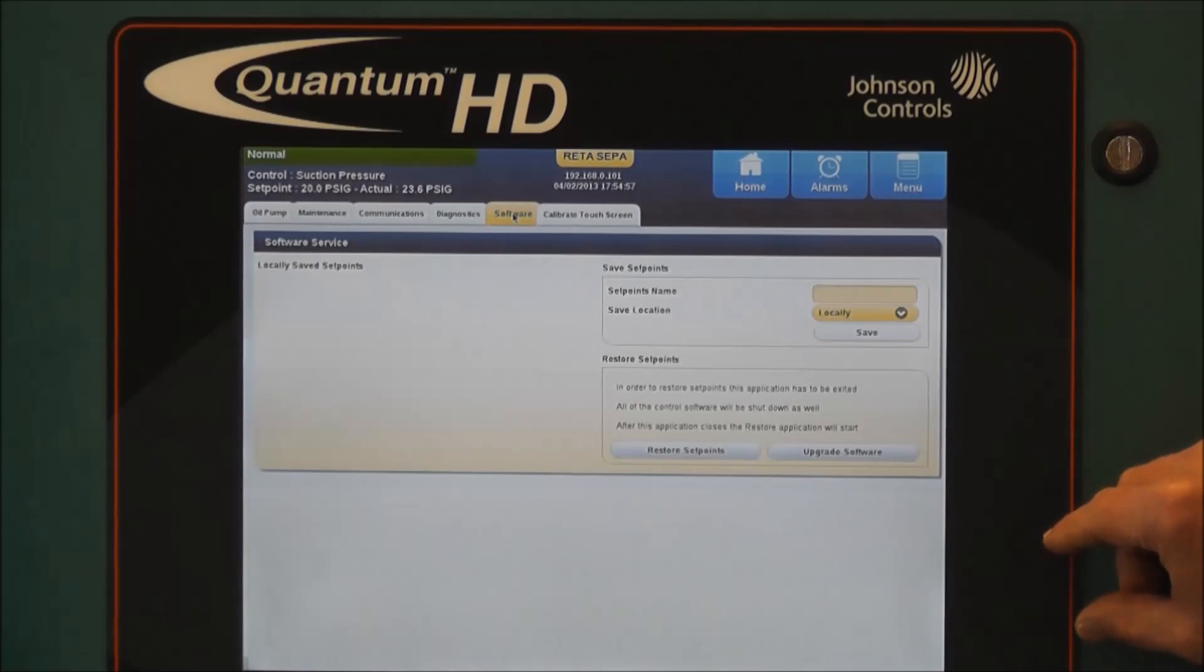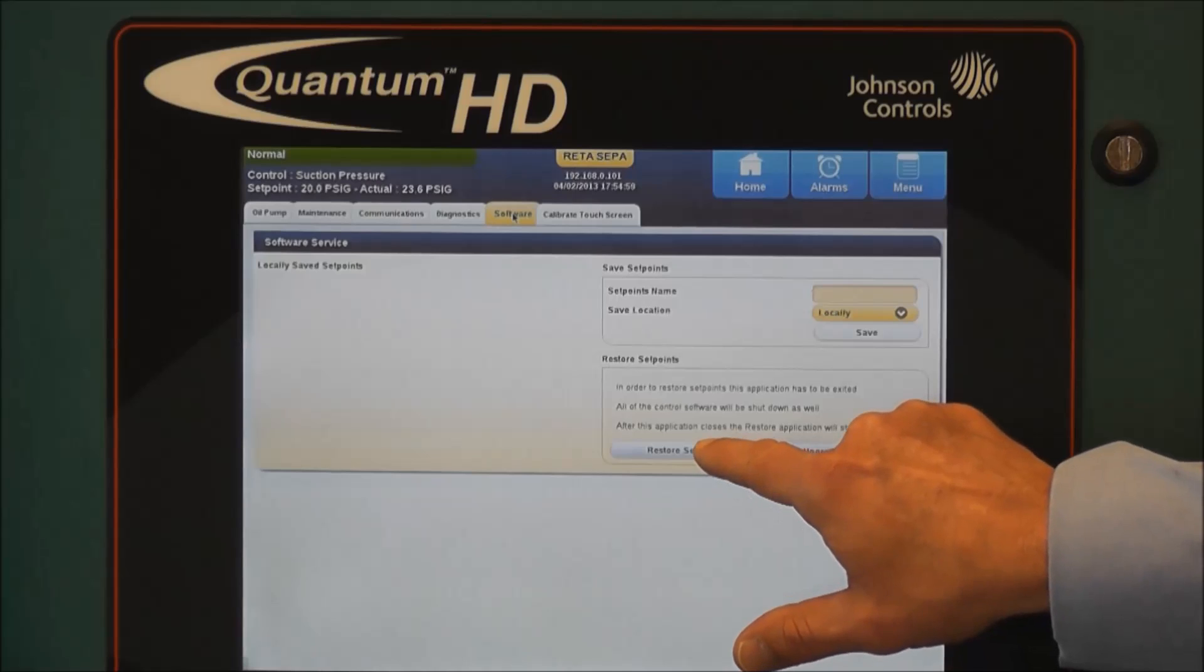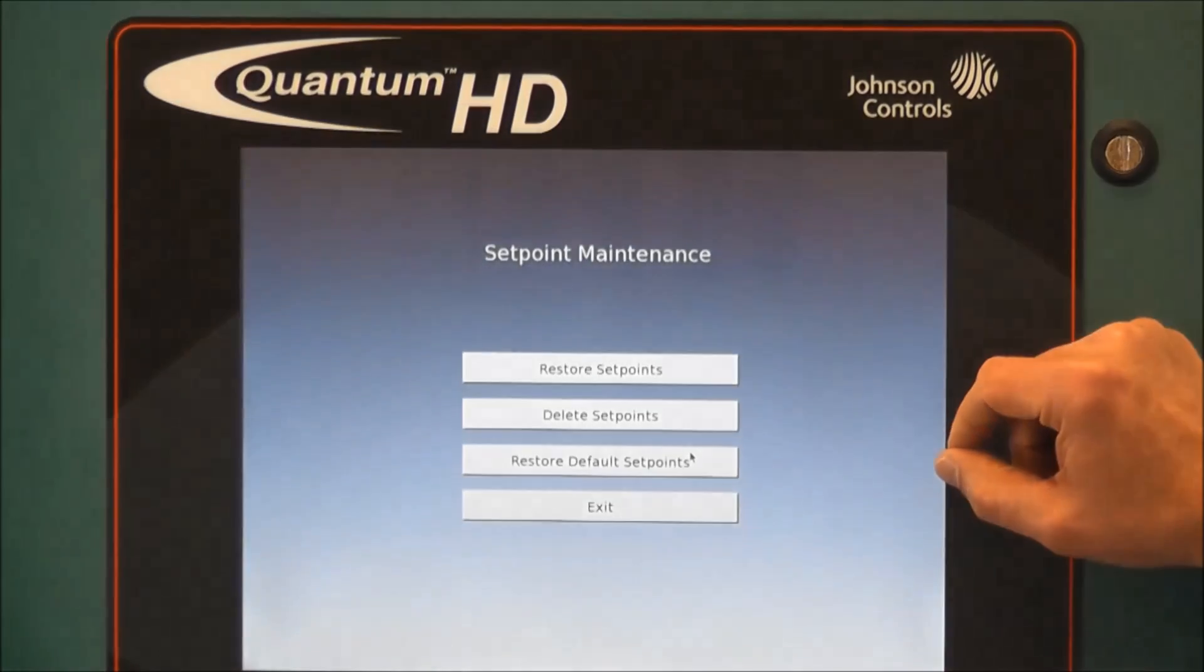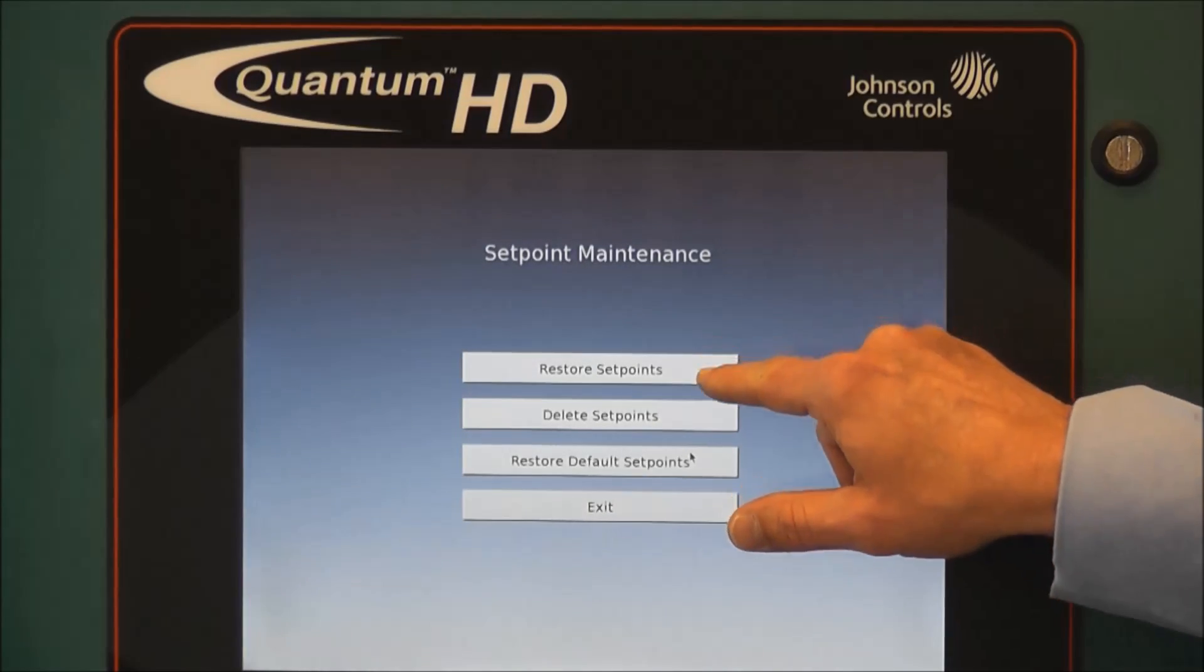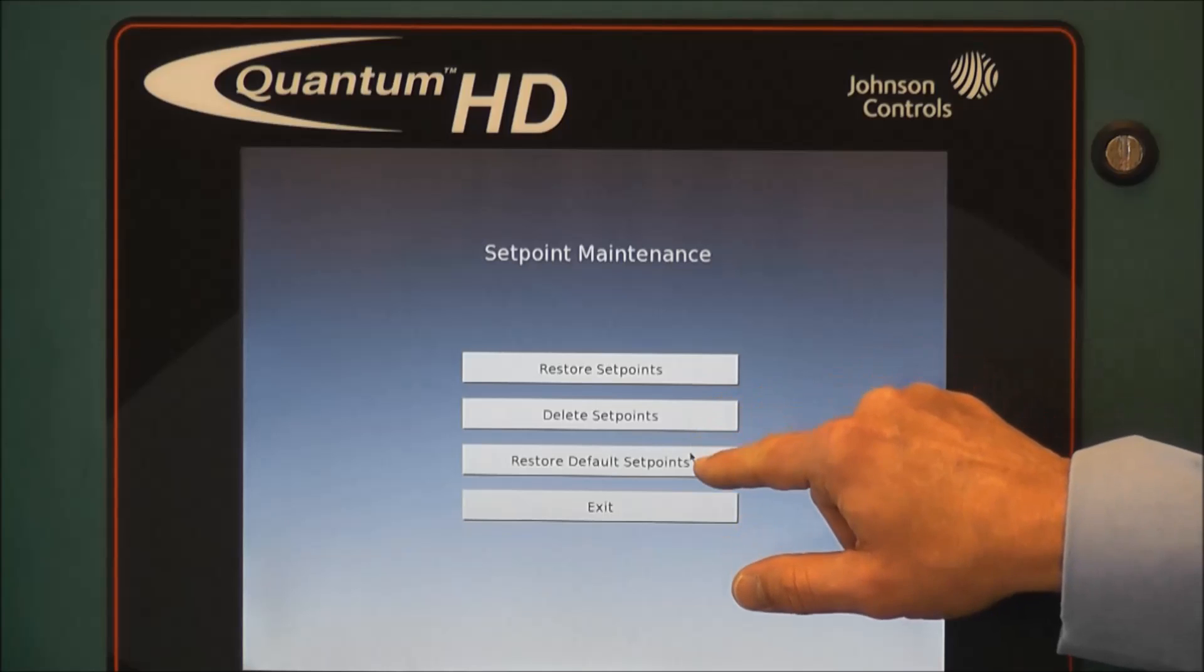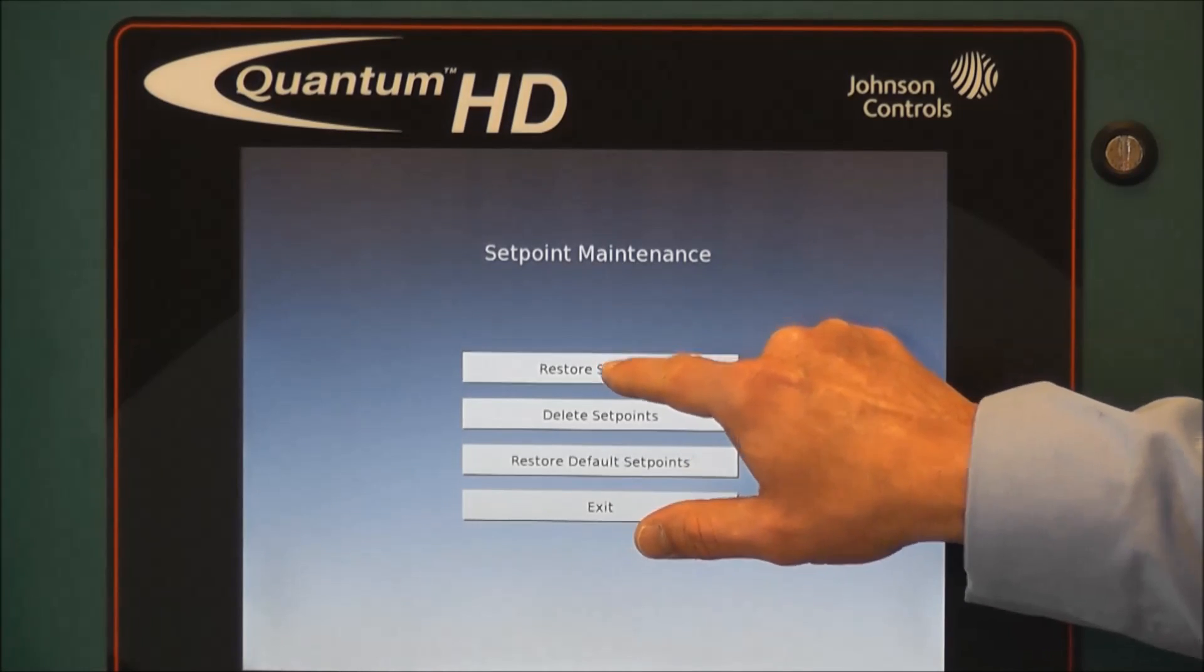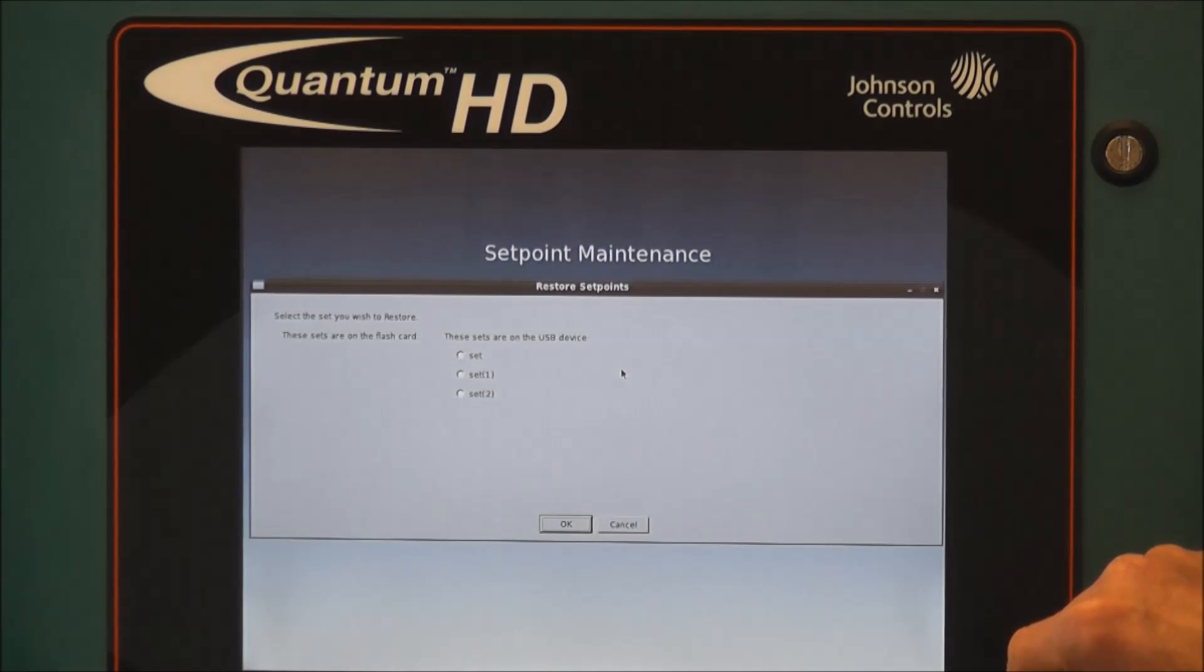Now that we're going to restore the setpoints, you'll notice a button toward the lower half of the screen for restore setpoints. And once you push that button, you'll go through a loading process and it will ask you if you want to restore setpoints, delete setpoints, restore default setpoints, or exit. And for our purposes, we will of course select restore.